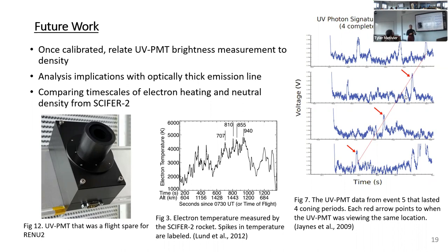We also want to compare electron temperatures and spikes measured by the rocket with the UV PMT data to see if we can connect the electron heating and neutral density enhancements. If there's a connection, we'll look at what the time scale differences are, tying it all the way back to the timescales of type 2 neutral upwelling and the PMAP effect.